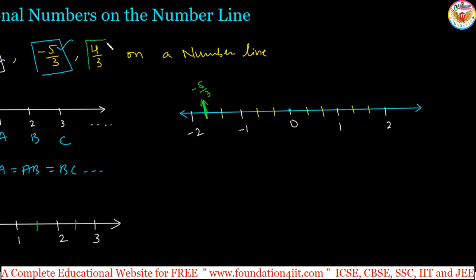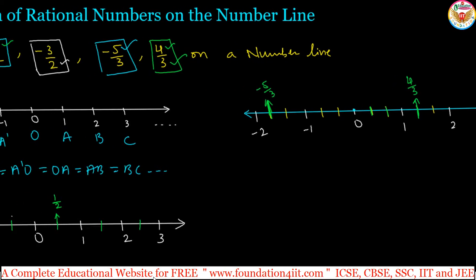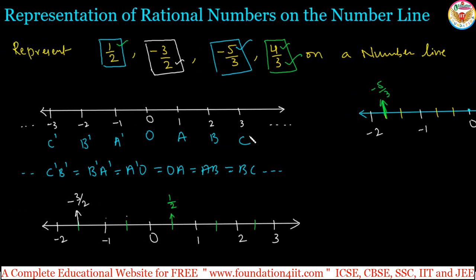For 4/3, the denominator is 3 so the 3 equal parts are already done. The numerator is 4, so from 0 we go to the right side 4 points — first, second, third, fourth. This fourth point is 4/3. This is the simple method: based on the denominator, divide into parts; then based on the numerator, find the position of the number. This is how we can represent any fraction or rational number on the number line.